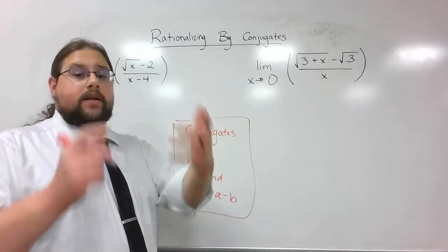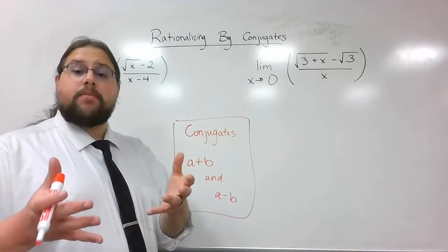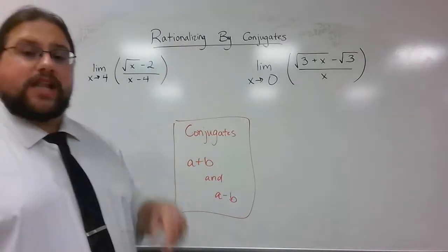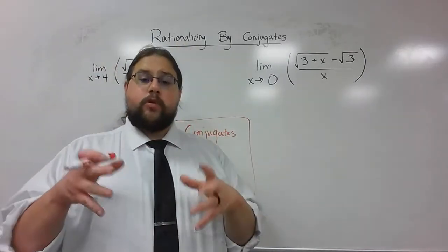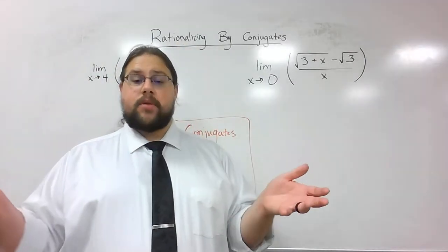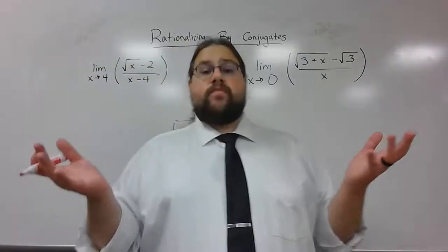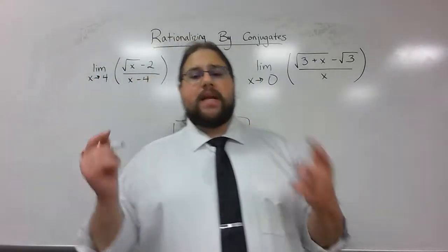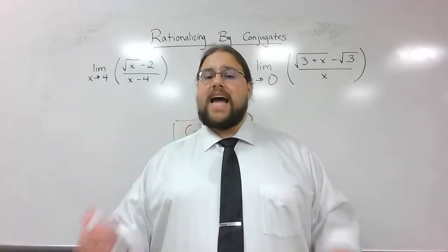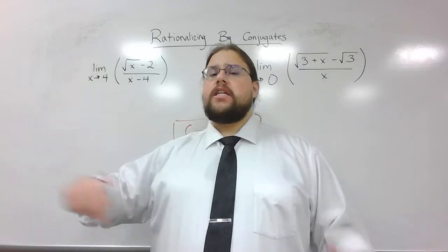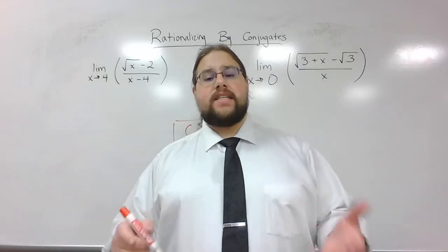When you learned rationalizing probably the first time, it was probably algebra 2, maybe even geometry, and they would talk about rationalizing the denominator, where you would try to make the denominator some number or something else so that there wasn't a square root in the bottom. That is still a great way to describe it, but here's the thing. It doesn't always happen in the denominator. It might be that I have to rationalize the numerator to make things work out nicely.